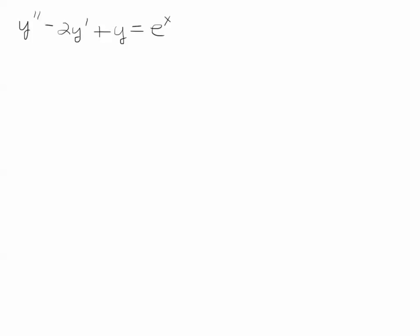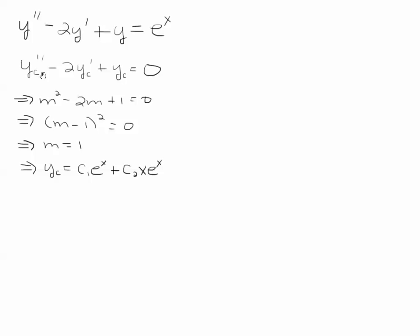Alright, the first thing that we're going to do is solve the complementary or homogeneous ODE and get the complementary solution or homogeneous solution. We're just going to set up the characteristic equation. We notice that we get repeated roots, so we're going to have c1e to the x plus c2xe to the x.